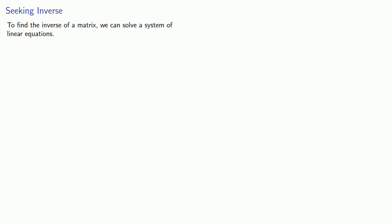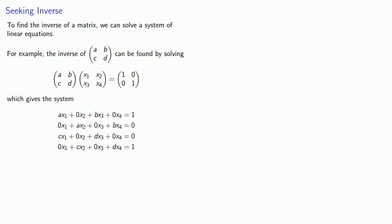So if I want to find the inverse of a 2 by 2 matrix, I can solve the system with four unknowns. Another good habit for mathematicians or human beings in general is asking how can we do this more efficiently?